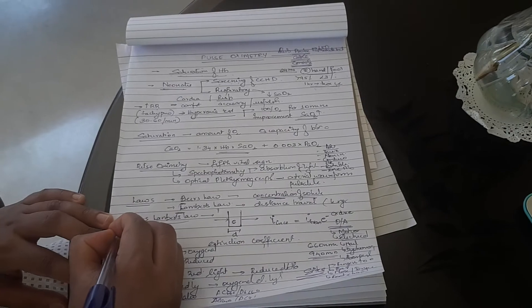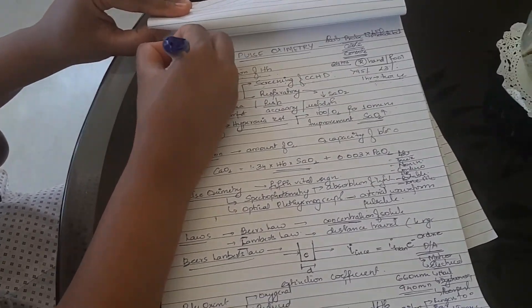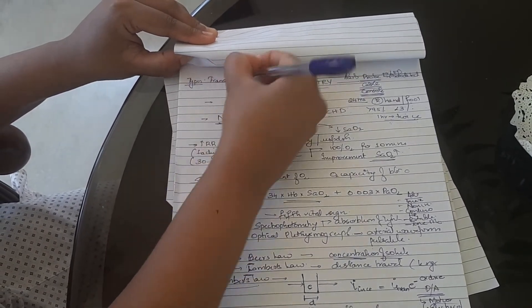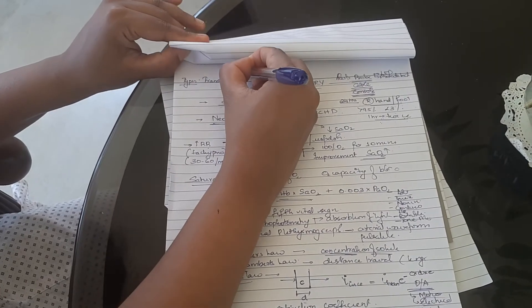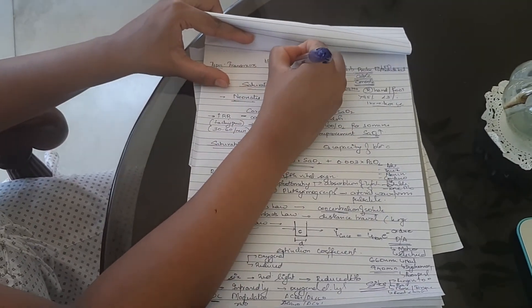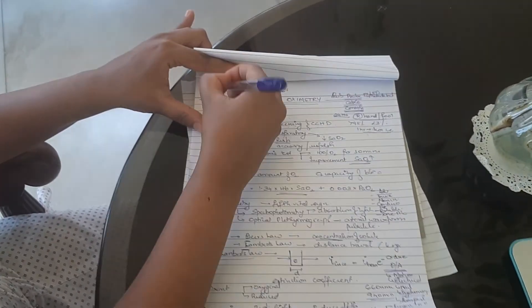Next, we move on to types. There is transmission type pulse oximetry where the incident light is detected. There's an LED here and the photodetector is on the opposite side. Like in a finger, the photodetector is on the opposite side. This is transmission type.